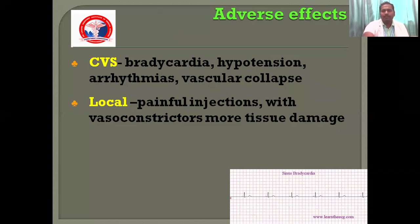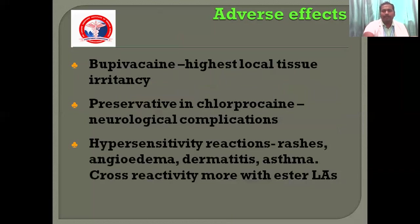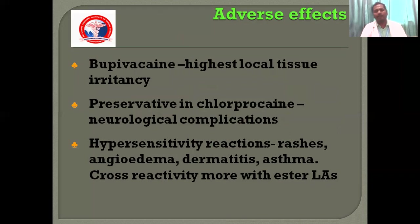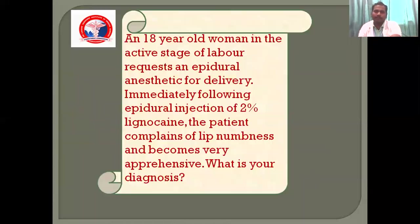The ECG shows sinus bradycardia. Bupivacaine has the highest local tissue irritancy. The preservative in chloroprocaine causes neurological complications. Hypersensitivity reactions such as rashes, angioedema, and dermatitis can be seen with the ester group of local anaesthetics.